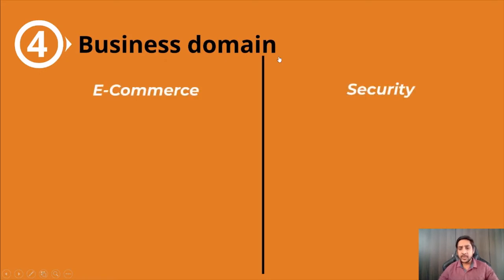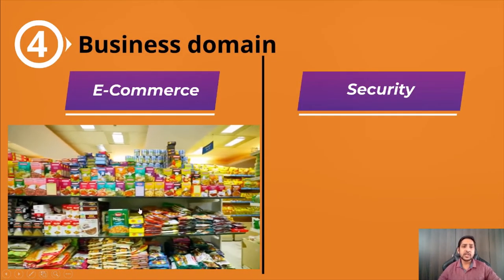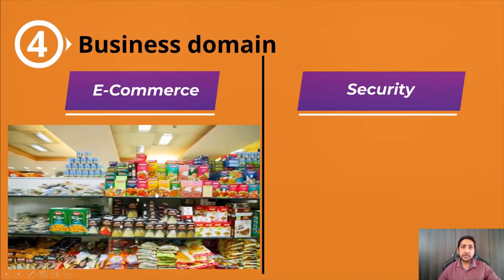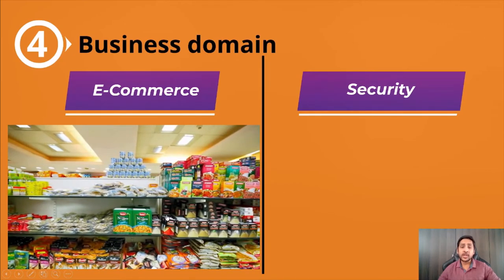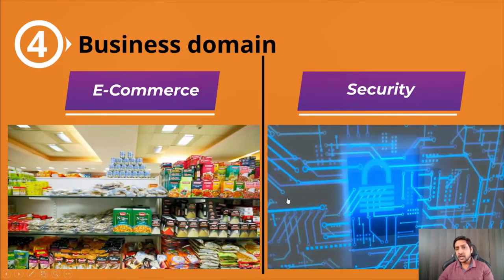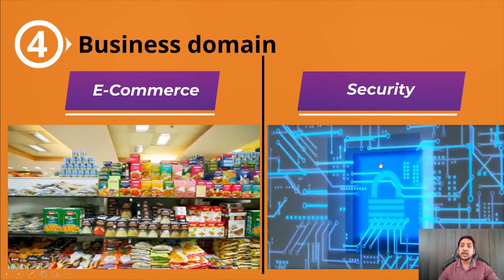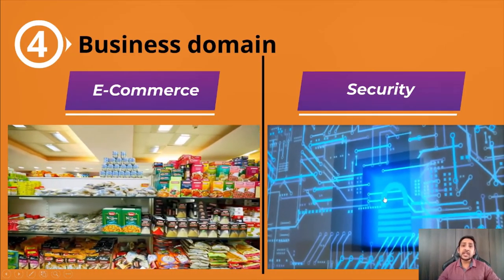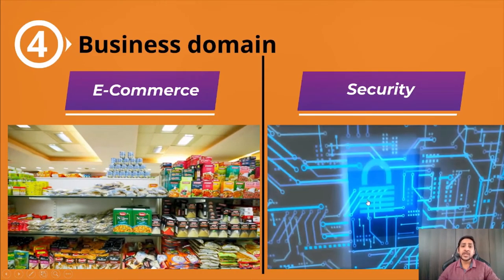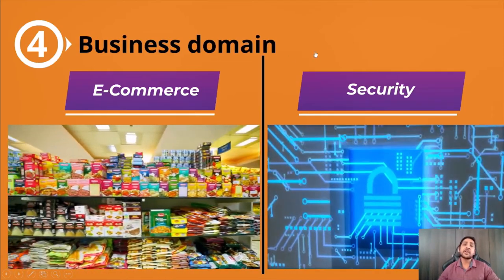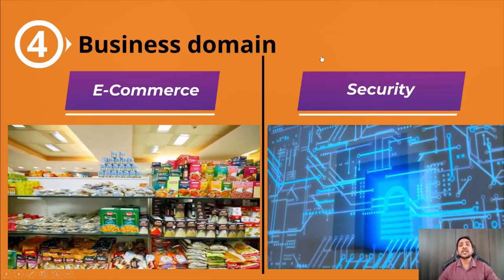The fourth factor is business domain. Suppose you are working for e-commerce — the software for billing should handle different load conditions. Whereas when working for a security-related product, the objective is to see whether the software is secure enough. Since the objective is different, to achieve it we will have a different type of test process. Business domain also influences the test process.